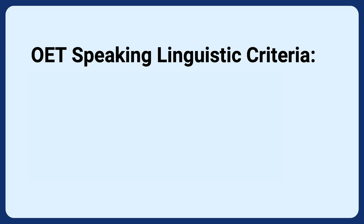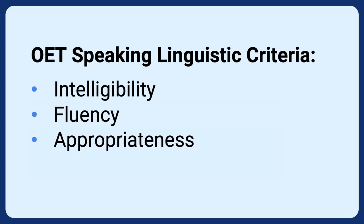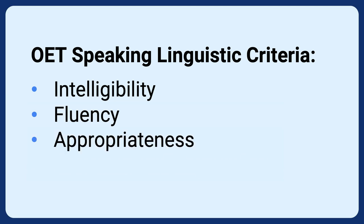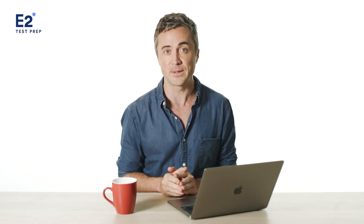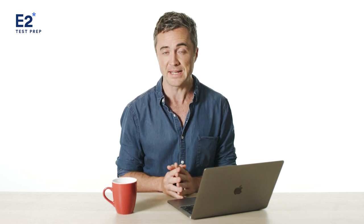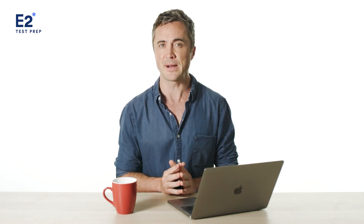The OET speaking linguistic criteria consists of four parts: intelligibility, fluency, appropriateness, and grammar and expression. Before we look at intelligibility and all its sub-parts, let's look at the OET speaking scoring criteria that the examiners use, just so you know how important and relevant each of them are.